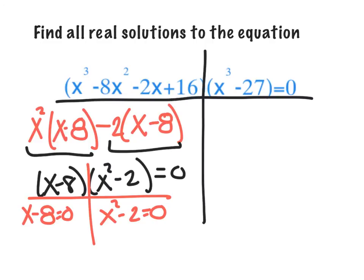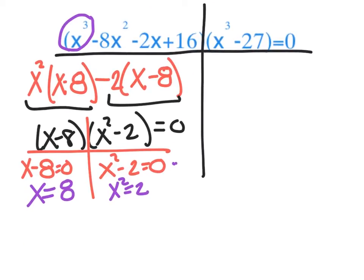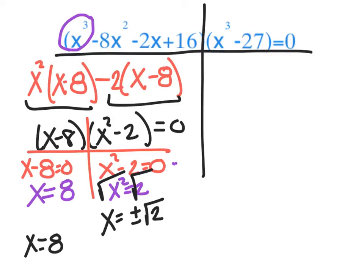Following my work: I pulled an x² out of the first two terms and a negative 2 out of the second pair, then pulled out the binomial GCF. Now, look at the degree — it's x cubed, so I'm anticipating 3 answers. Setting x - 8 = 0 gives x = 8. For x² = 2, I add 2 over and take the square root — don't forget plus and minus. So that gives x = +√2 and x = -√2. That's where my three answers come from.